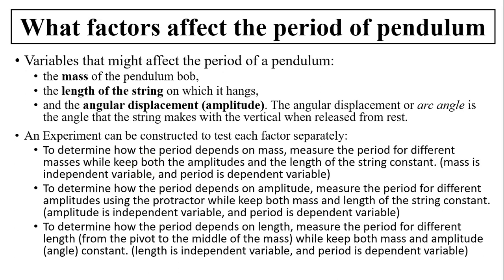To determine how the period depends on mass, we simply measure the period for different masses. Attach different mass as the bob at the end of the string while keeping the amplitude and the length of the string constant. In this case, mass is the independent variable and the period is the dependent variable. As a matter of fact, we are going to do this lab.